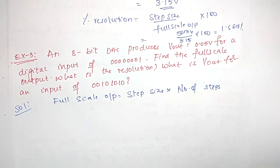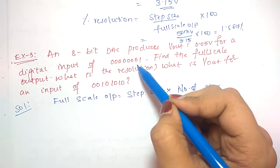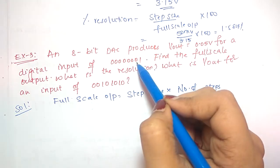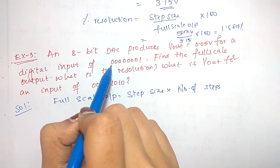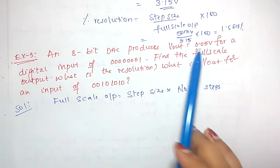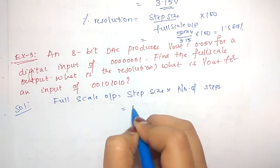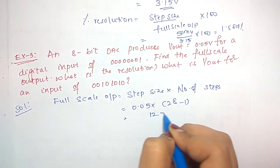Step size is not given directly, but it is given that Vout equals 0.05V for a digital input of 1. That means for input 1, output is 0.05V — so the step size is 0.05 minus 0, which is 0.05V. Number of steps is 2 power 8 minus 1, giving a full scale output of 12.75 volts.